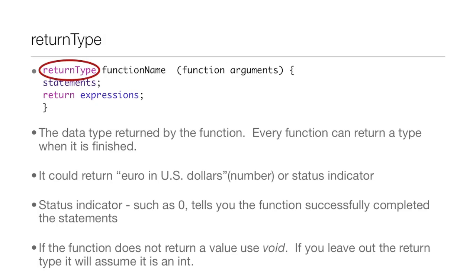A status indicator such as zero tells you the function successfully completed all the statements. If the function does not return a value, just use void. If you leave out the return type, it will assume the return type is an int.